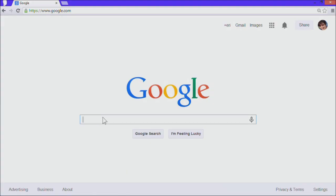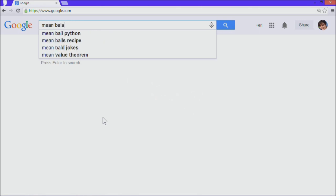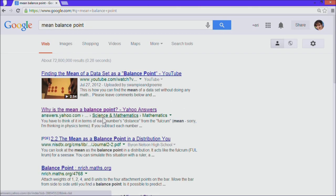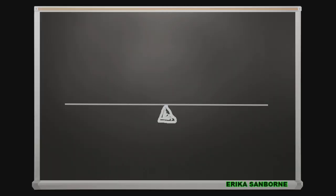I just Googled mean balance point and got 76 million results. This tells me you might have heard this concept before. And I think it can help understand the relative positions of the measures of central tendency, as well as the basic functioning of the mean and deviation scores and how they cancel.